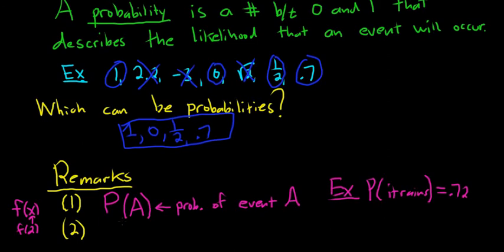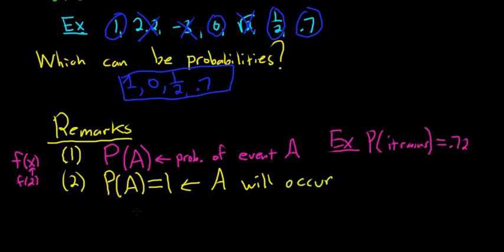So a probability is number between 0 and 1, and it describes the likelihood of something occurring. So the closer it is to 1, the more likely it is. The closer it is to 0, the more unlikely it is. So if it's actually equal to 1. So if you have the probability of some event and it's equal to 1, this means that A will occur. So it's definitely going to happen. Right? It's definitely going to happen. So the probability of A equal to 1 means A is definitely going to happen.